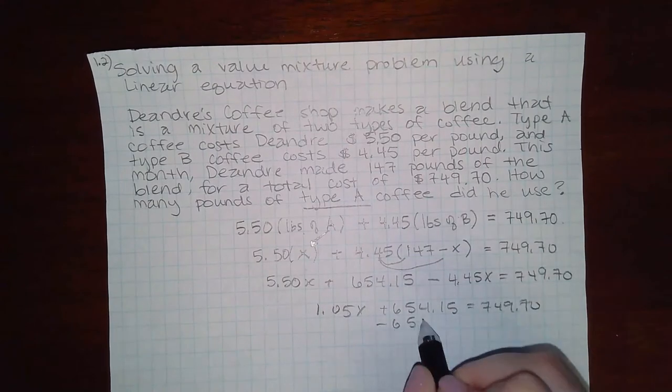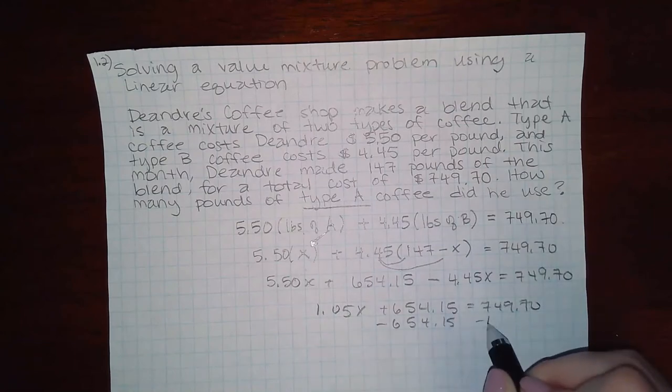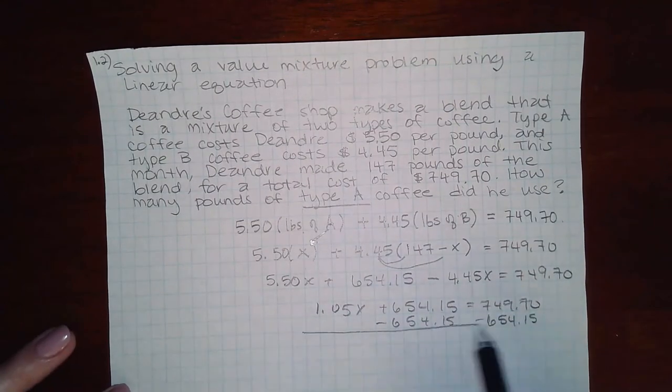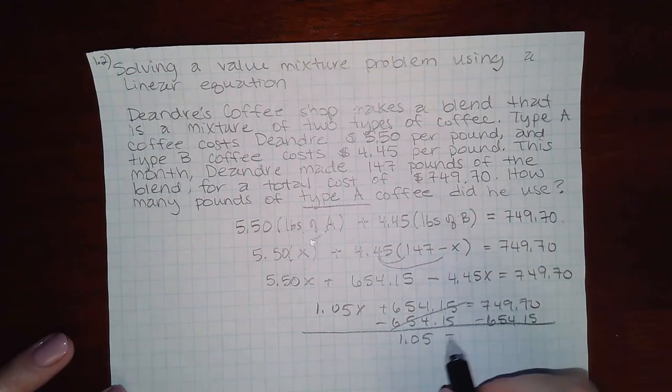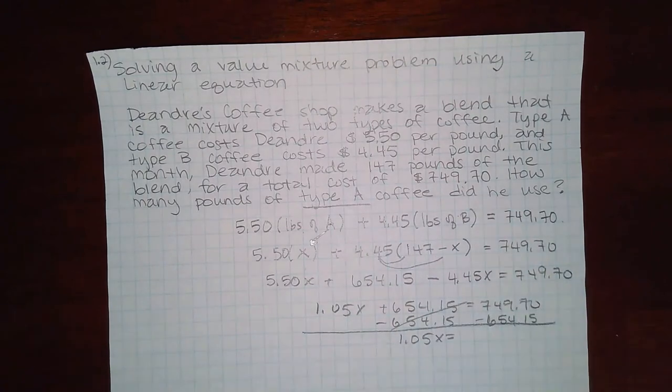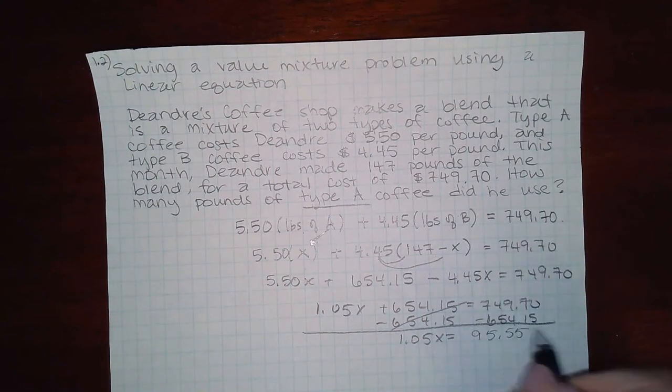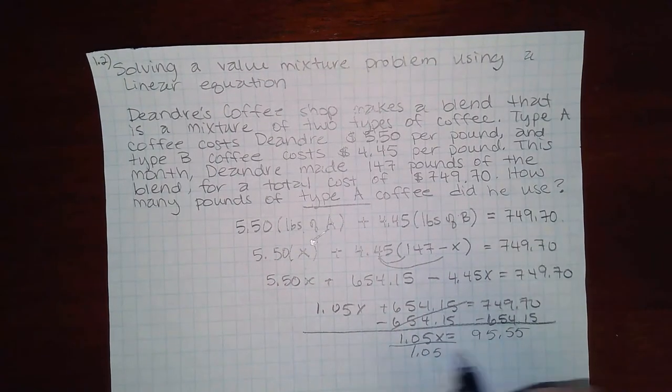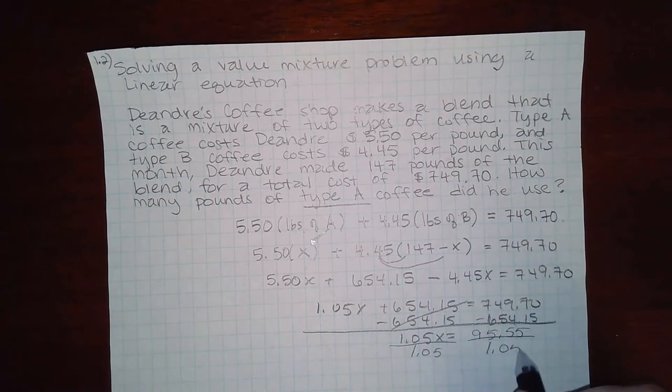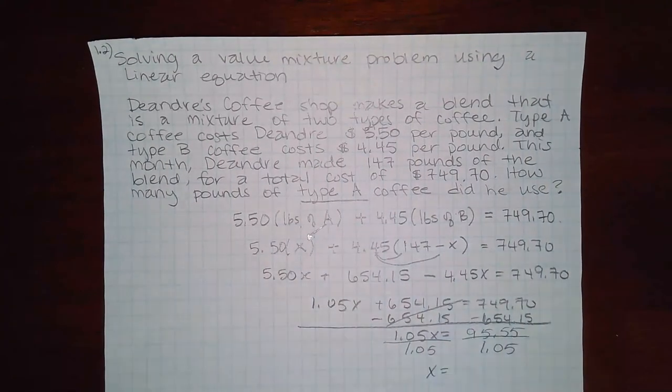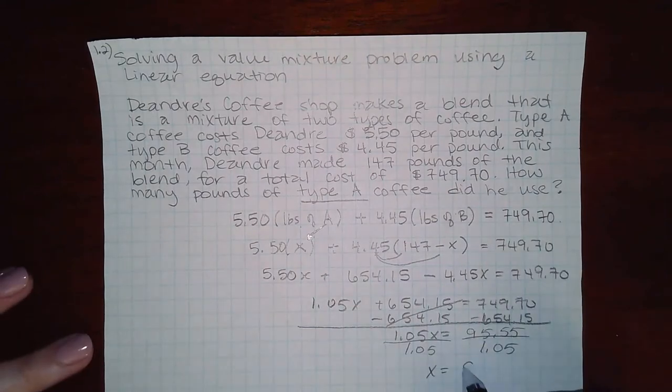And then minus the constant over. I get 95.55. And then divide by 1.05. I get 91.